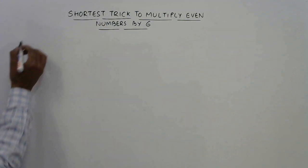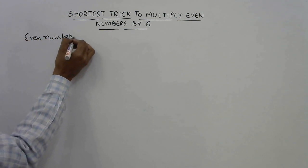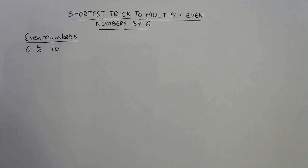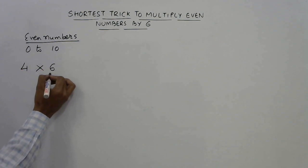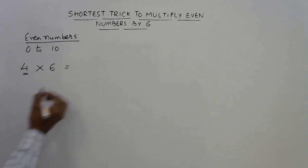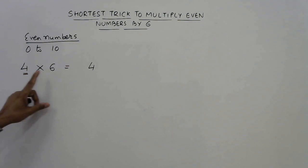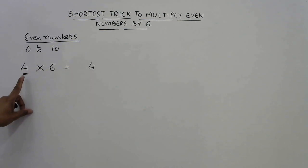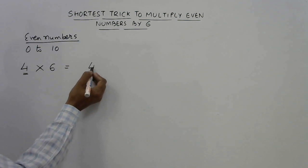Now, I am talking about even numbers. This trick is valid only for even numbers. Let us start with even numbers from 0 to 10, that is single digit even numbers. Suppose you have 4 and you need to multiply it by 6. We all know that it is 24, but I just want to tell you the trick first. So whenever you multiply an even number by 6, you will have the same number at the unit place. So multiplying 4 by 6 will give you a number which ends with 4. And the next step: what is half of 4? It is 2.